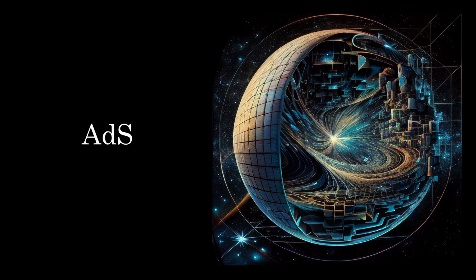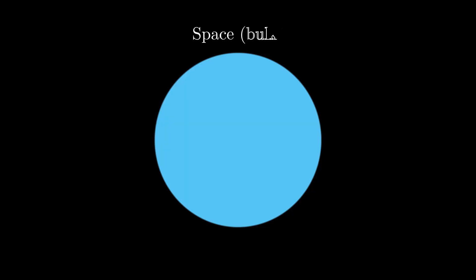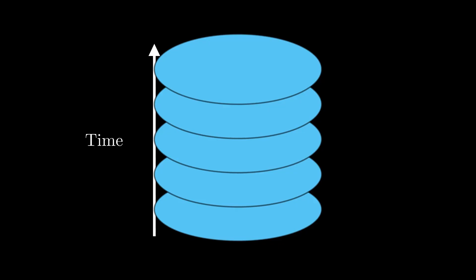Now we turn to ADS. We can visualize the spatial part of ADS as a disk that fills in the circle in which the CFT lives. Including time, we get a solid cylinder that fills in the boundary cylinder. The ADS spacetime in our example lives in three spacetime dimensions, two from space and one from time. However, unlike the boundary spacetime, the bulk spacetime is curved. Let's see what this means.